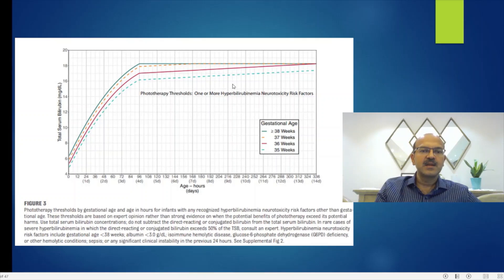This is the chart with one or more hyperbilirubinemia risk factors which we defined earlier. You may need to consider measuring the serum albumin at this stage and also to look at blood group, DAT, and G6PD. Of course, if you are sending the newborn screening, you don't need to necessarily repeat the G6PD test because it wouldn't change your approach to treatment. Where there is a surprise element and the jaundice comes suddenly, you may have to do that. Monitoring is carefully important.